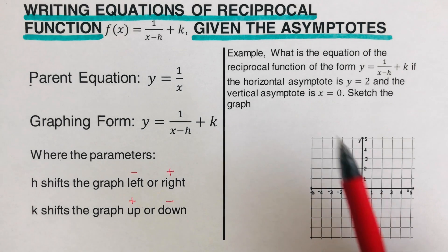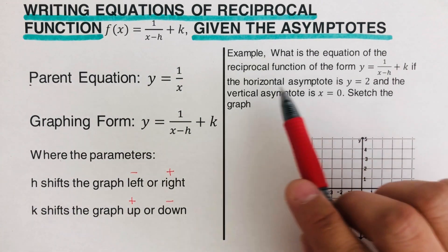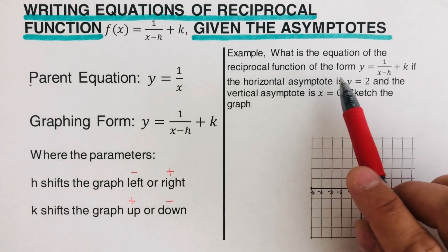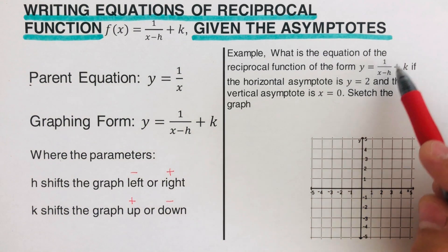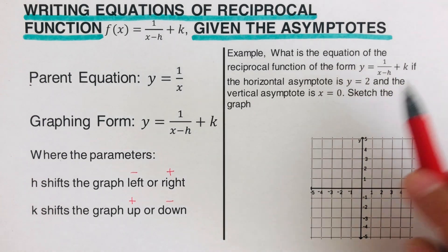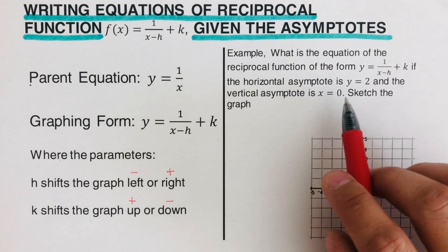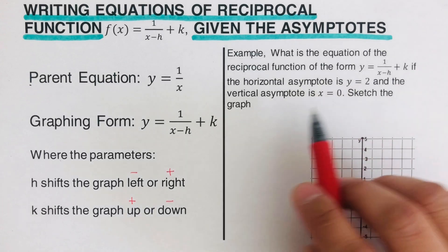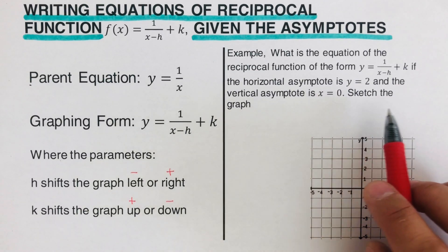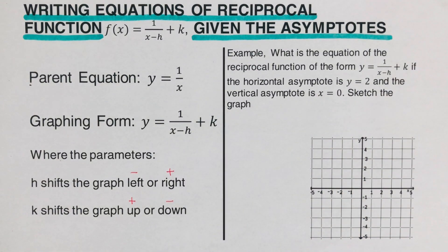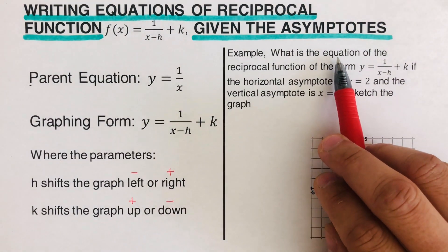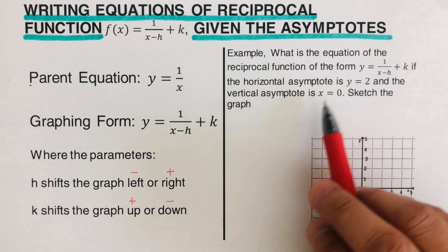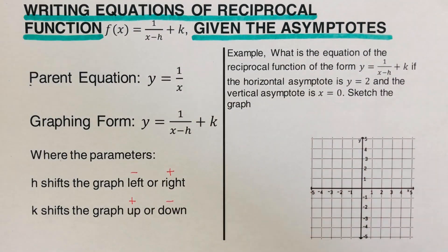For the first example: what is the equation of the reciprocal function of the form y = 1/(x - h) + k if the horizontal asymptote is y = 2 and the vertical asymptote is x = 0? We also need to sketch the graph. The first step is to solve for h and k.